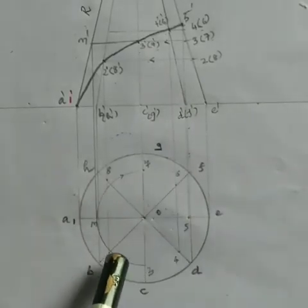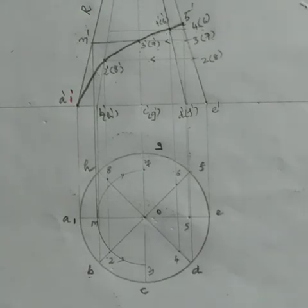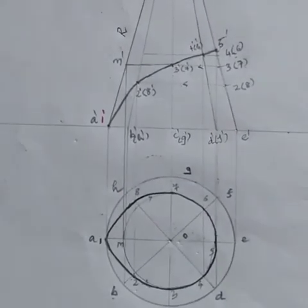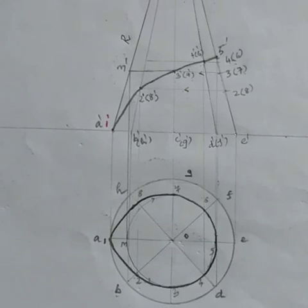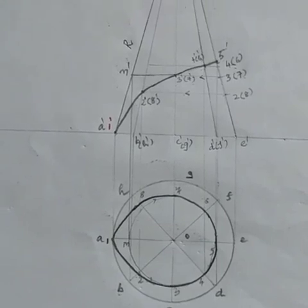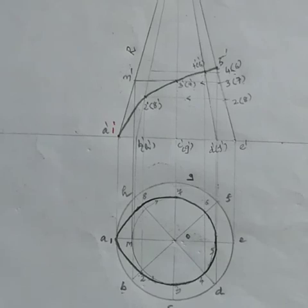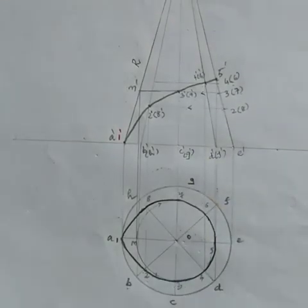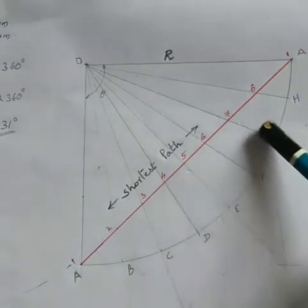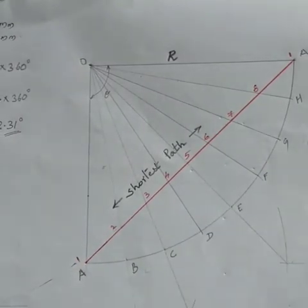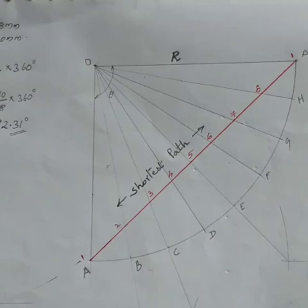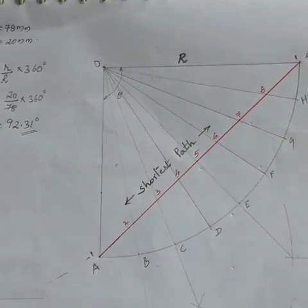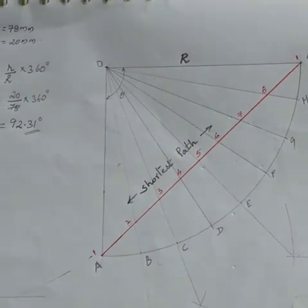This is the HB pencil we use to draw. This is the top view — this is the job. Generators 1, 2, 3, 4, 5, 6, 7, 8. This is our front view and this is the top view. This is the shortest path and the travel path: I, 1, 2, 1, 0. This is the answer.